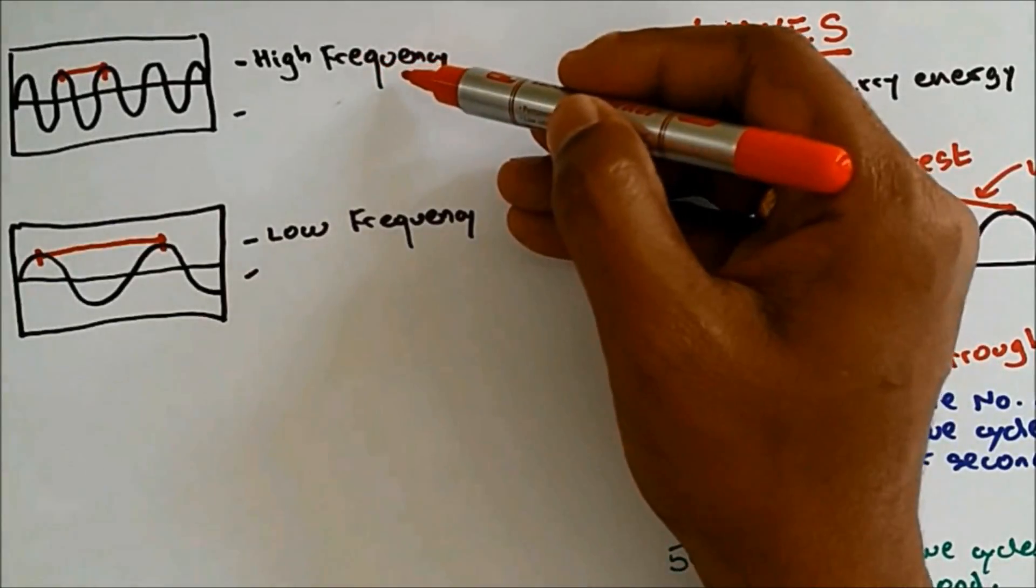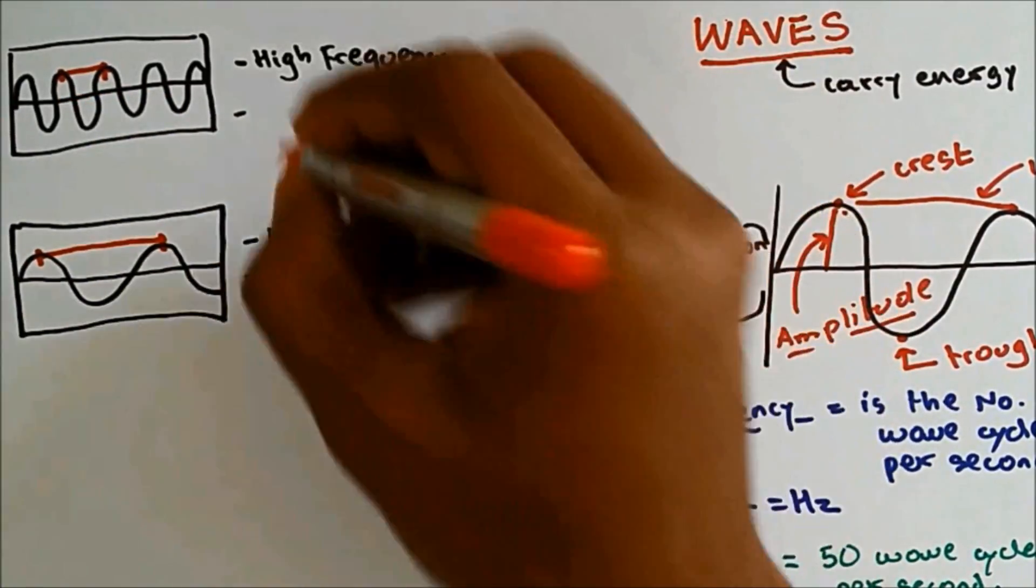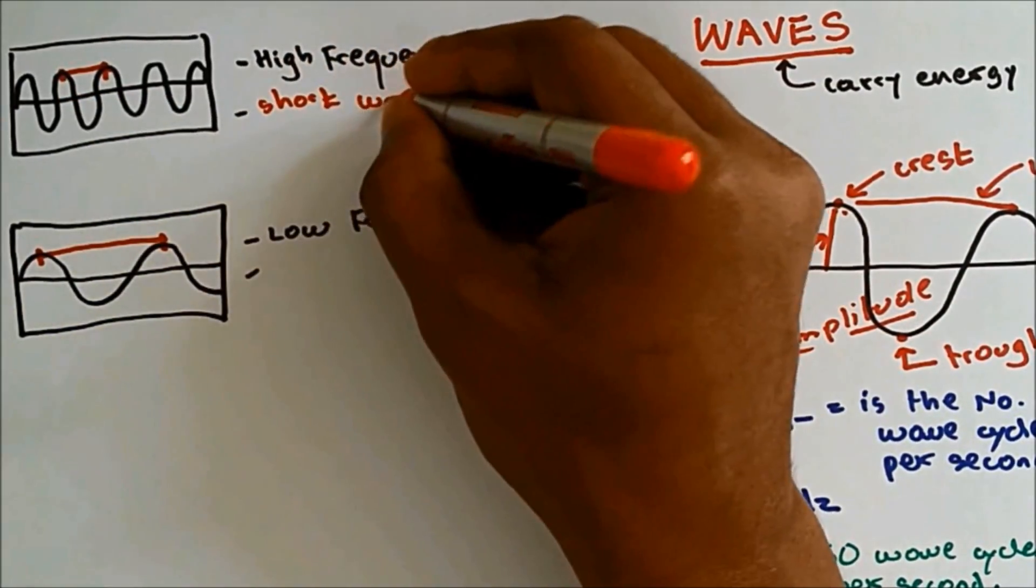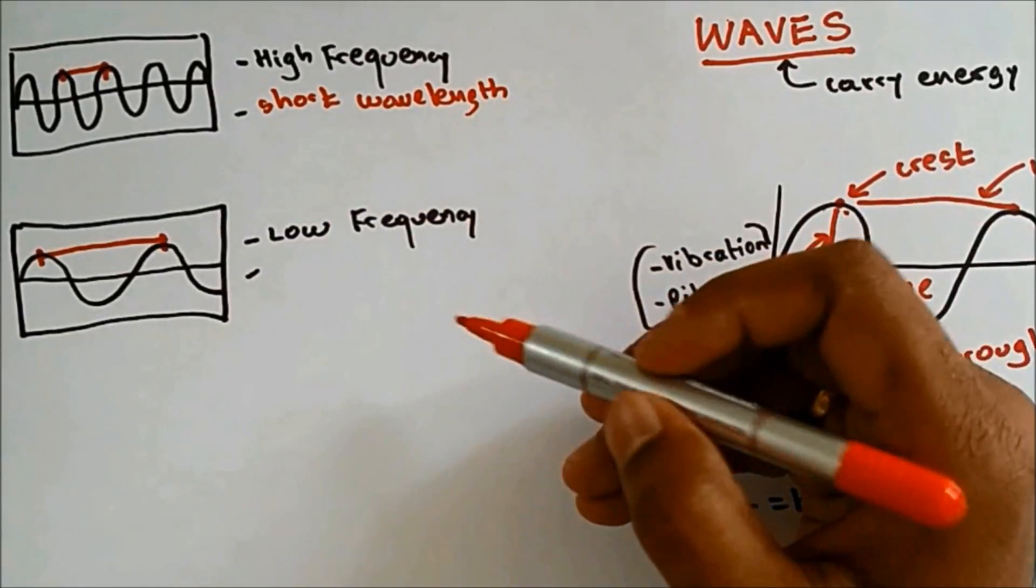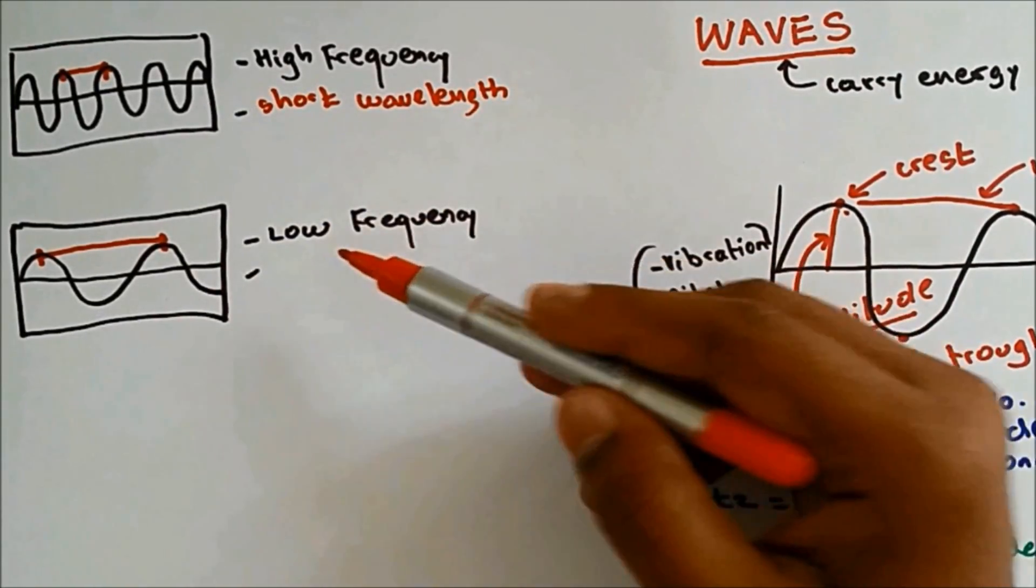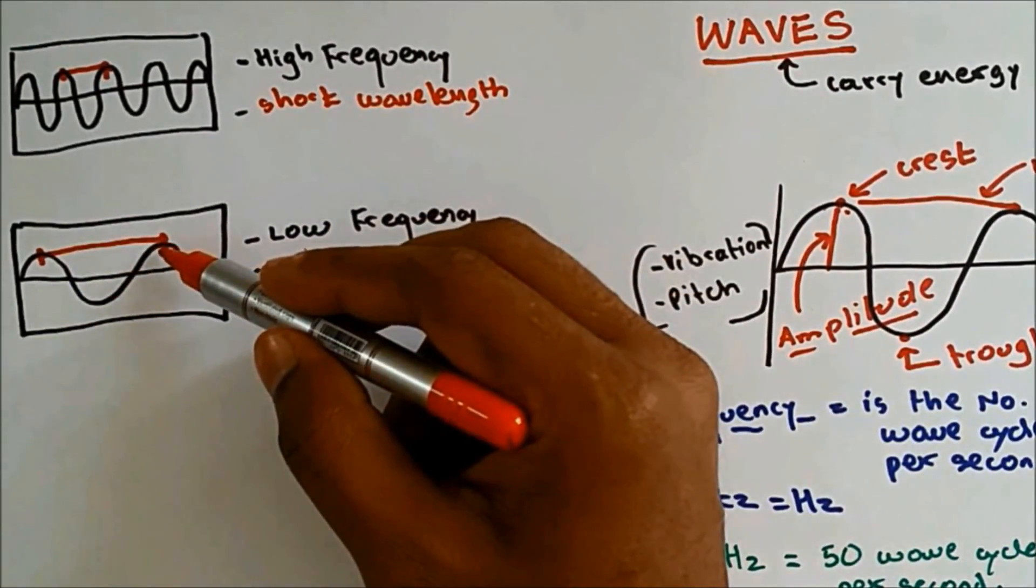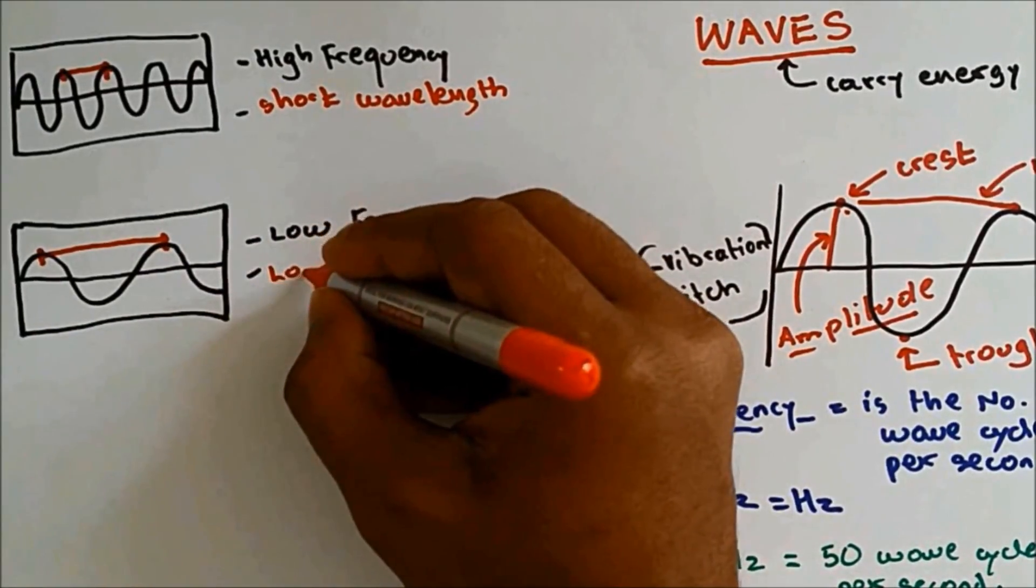So we can see that if the frequency is high, wavelength will be short. And if the frequency is low, the wavelength will be big, so long wavelength.